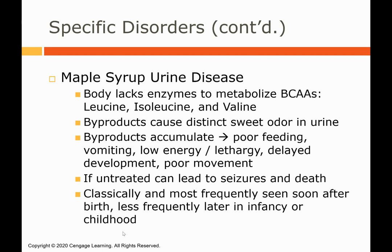Maple syrup urine disease is another condition — a recent student had this on the RDN exam. The body lacks enzymes to metabolize branched-chain amino acids: leucine, isoleucine, and valine. Byproducts cause a distinct sweet odor in the urine, which is why it's called maple syrup urine disease. These byproducts accumulate and cause issues including poor feeding, vomiting, low energy or lethargy, delayed development, and poor movement. If untreated, it can lead to seizures and death. It is most frequently seen soon after birth; the more delayed the diagnosis, the more harm it causes.